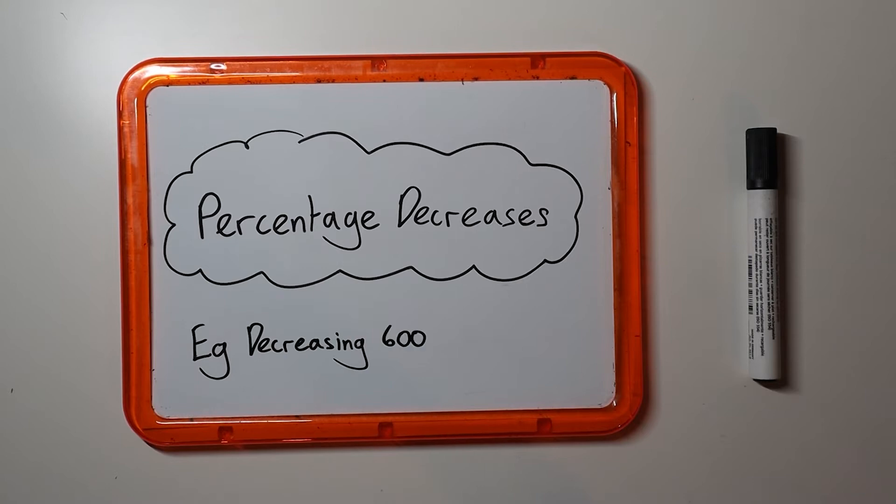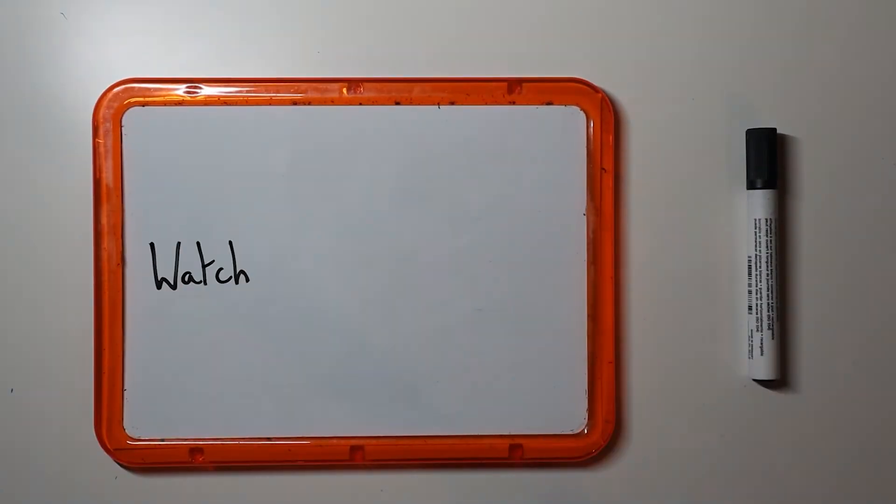For example, decreasing 600 by 25%. Now if you haven't already, you should watch our video on percentage increases first, as that covers the basics of percentages which we will be using in this video.